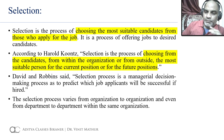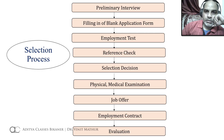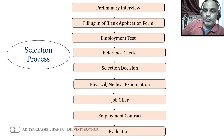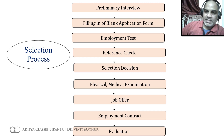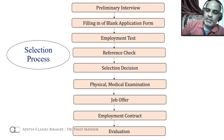On the basis of KSA, we finalize and select candidates — that is the selection process. These are the different steps involved in the selection process: the first step is the preliminary interview, then filling in the blank application form, then employment test, reference check, selection decision, physical and medical examination, job offer, employment contract, and finally the evaluation of the overall selection process. We will now discuss these steps one by one.